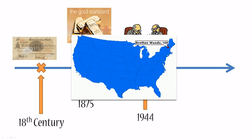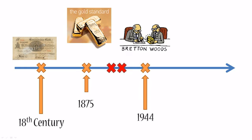By the way, if you're wondering why it's called the Bretton Woods Agreement, that's because it was signed in a town called Bretton Woods in New Hampshire, USA. And as you can expect, when you create something which is basically the gold standard version 2.0, there's a very high likelihood of it failing just as the gold standard did.